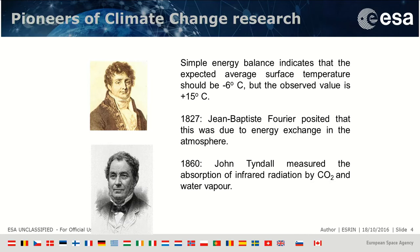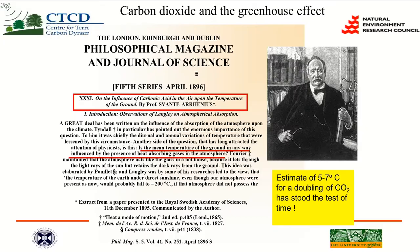The people who first pointed the way were Fourier, who said there has to be some sort of energy exchange in the atmosphere to make this happen. And in 1860, John Tyndall measured the absorption of infrared radiation by CO2 and water vapor and realized they would absorb heat — the way to absorb radiation, hence be able to hold heat in the system. Another major step forward was Arrhenius, who in 1896 postulated that the CO2 in the atmosphere could effectively make the Earth behave like a greenhouse. He came up with this phrase — greenhouse.